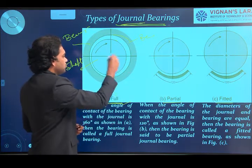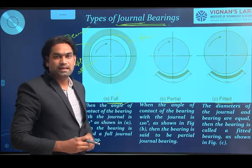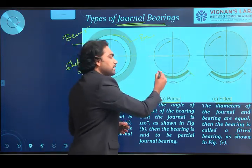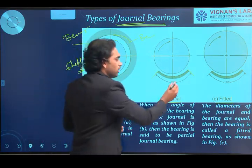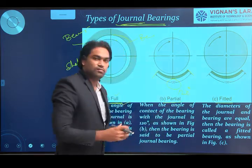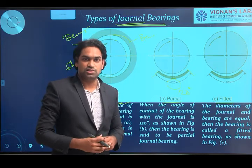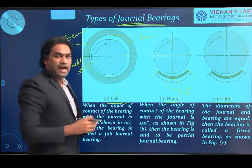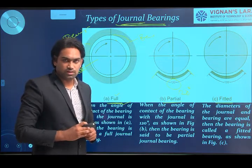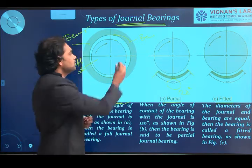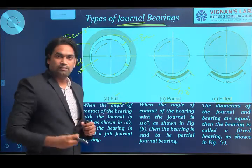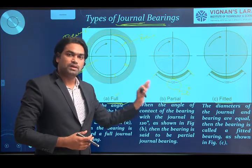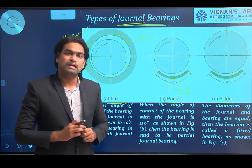In the full journal bearing, the shaft portion is completely enclosed by the bearing surface. In a partial journal bearing, there is no complete enclosure — only 120 degrees of enclosure around the shaft or journal. One important difference: in partial and full journal bearings, the diameter of the bearing is always slightly larger than the diameter of the journal. This difference in diameters gives the clearance between the surfaces, which provides space for the lubricant to reduce friction and wear.